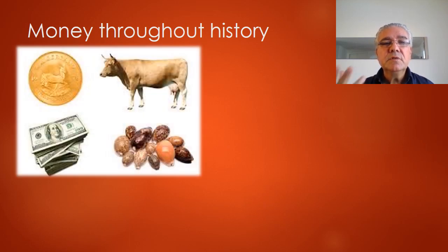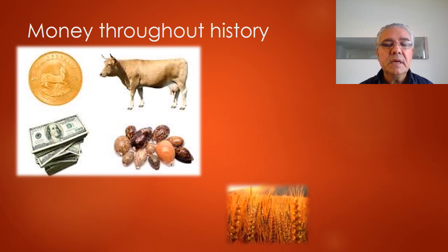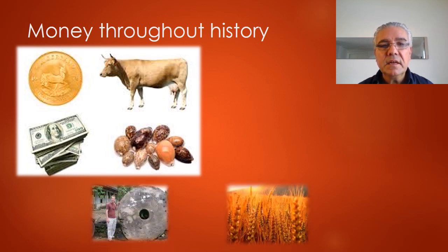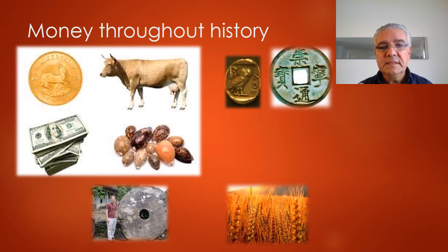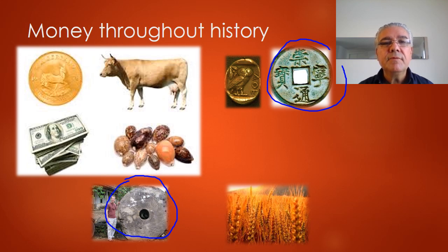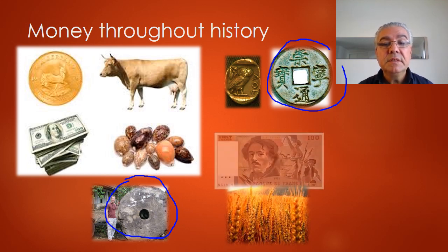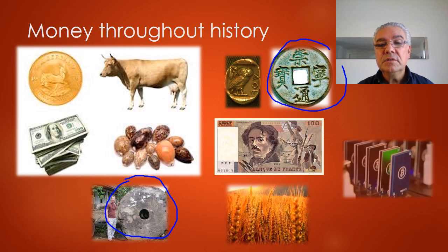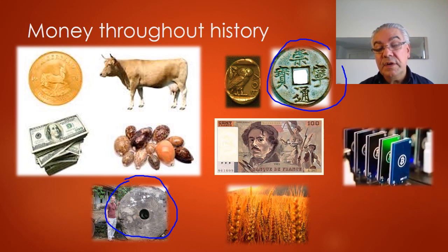Let's first look at some pictures of money that has been used throughout history. You can see cattle, shells, coins like this Greek coin, a stone from the Pacific island of Yap, a metal coin from China from which the term 'cash' has been derived, and the last one being electronic money or bitcoins.